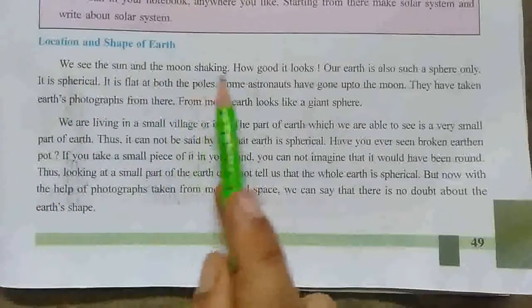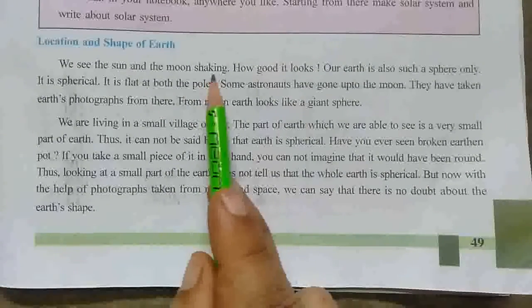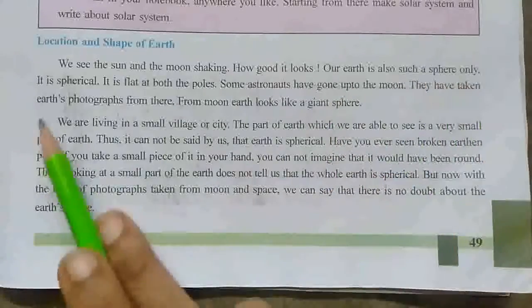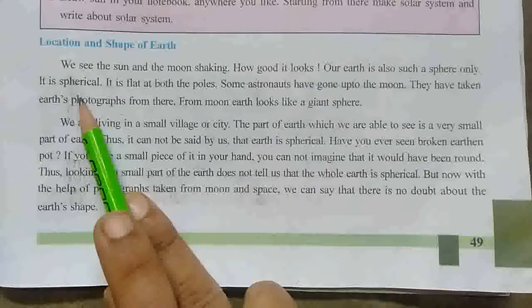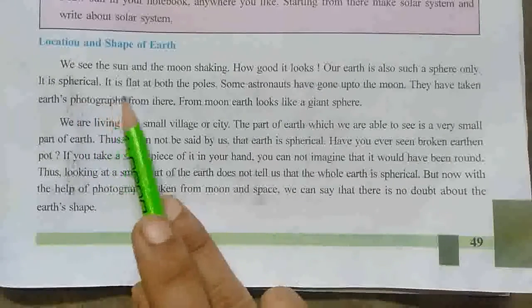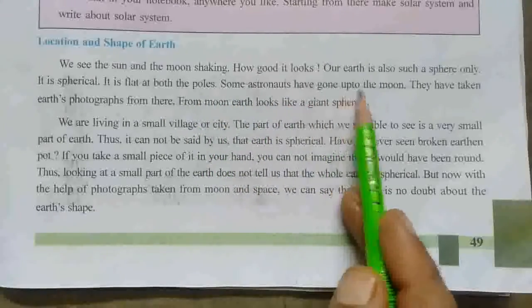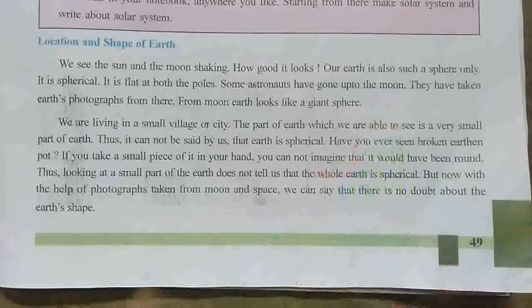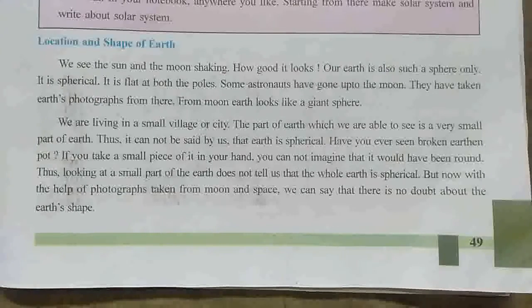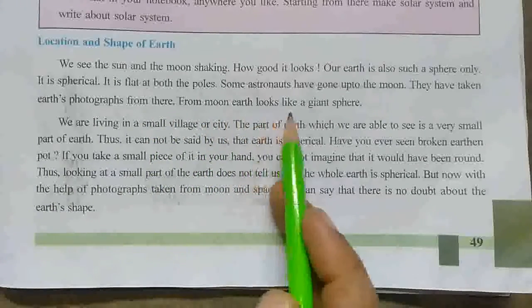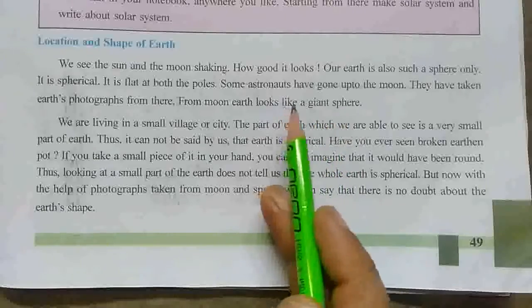We see the sun and the moon. Our Earth is also such a sphere. It is spherical, and it is flat at both the poles. Some astronauts have gone up to the moon and they have taken Earth's photograph from there. From the moon, Earth looks like a giant sphere.